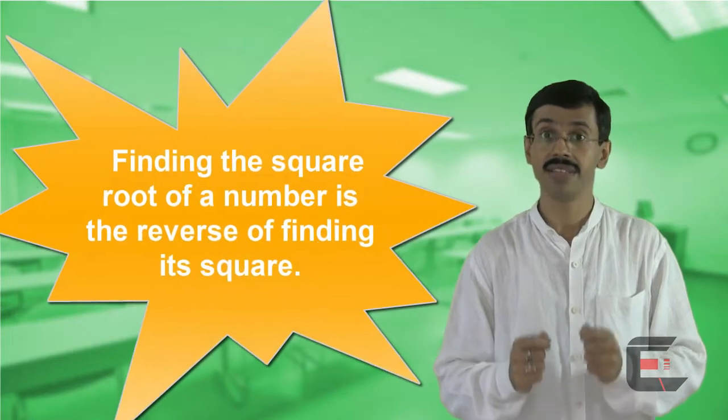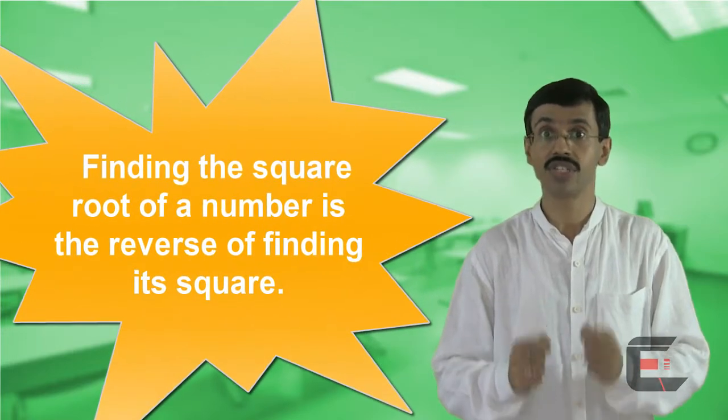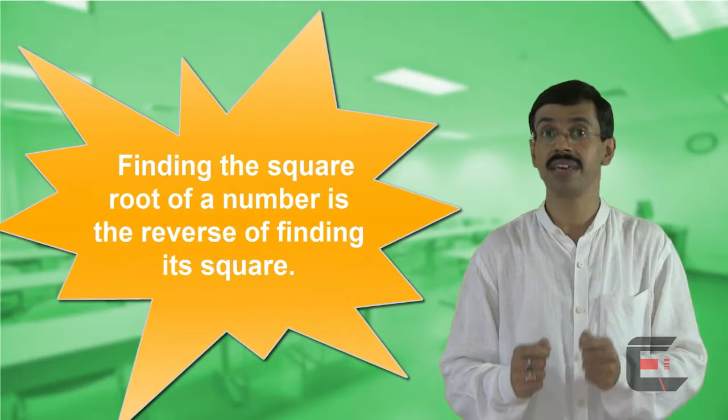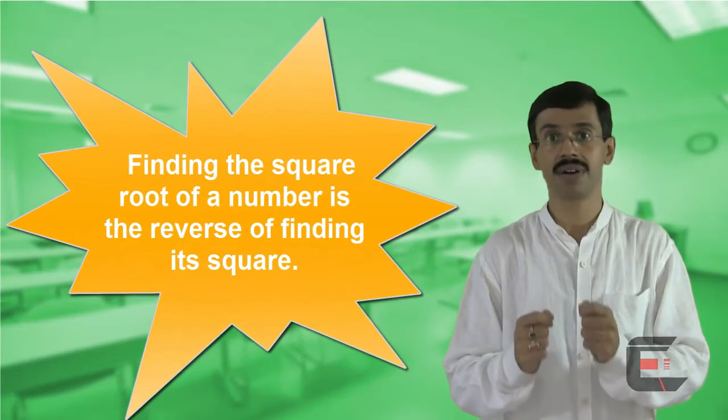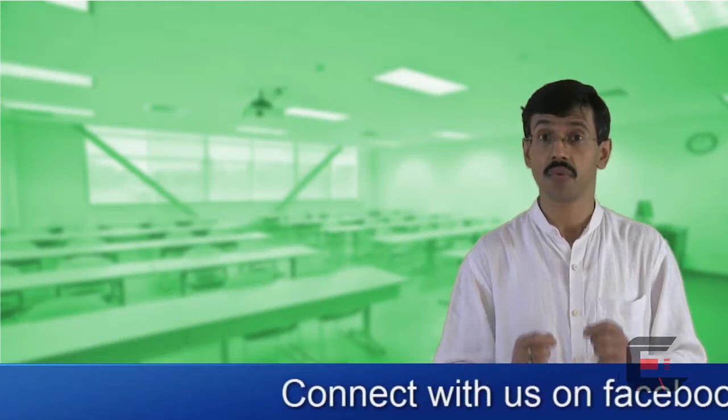This is useful because finding the square root of a number is just the reverse of finding the square of the same number. Now let's understand the technique with an example.